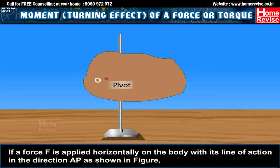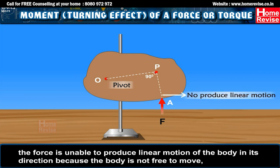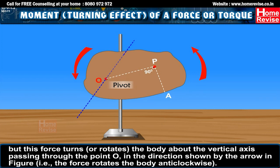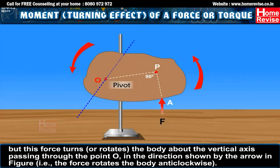If a force is applied horizontally on the body with its line of action in the direction AP as shown in the figure, the force is unable to produce linear motion of the body in its direction because the body is not free to move. But this force turns or rotates the body about the vertical axis passing through the point O, in the direction shown by the arrow in the figure — that is, the force rotates the body anti-clockwise.